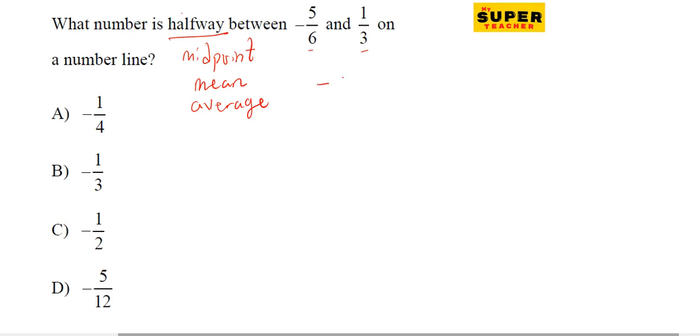So negative 5 over 6 plus 1 over 3. What's the equivalent of 1 over 3 that has a denominator of 6? That would be negative 5 over 6 plus 2 over 6. If we multiply 1 over 3 by 2 over 2, we get 2 over 6.